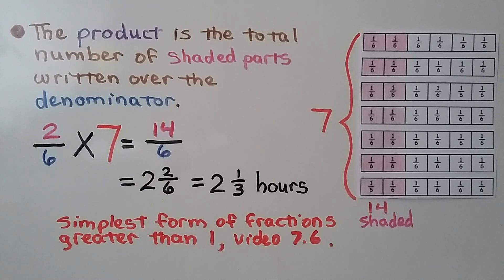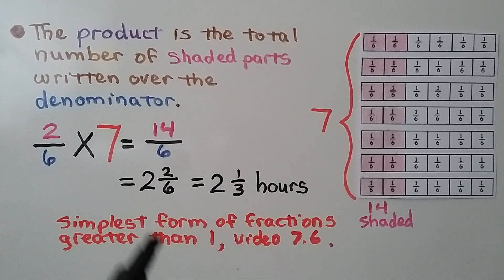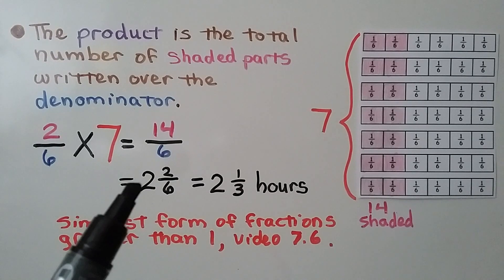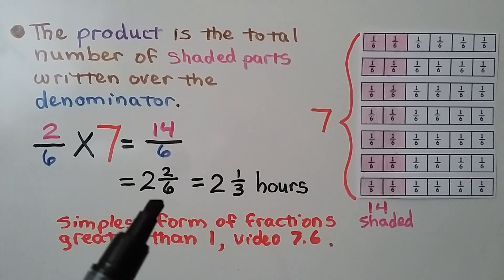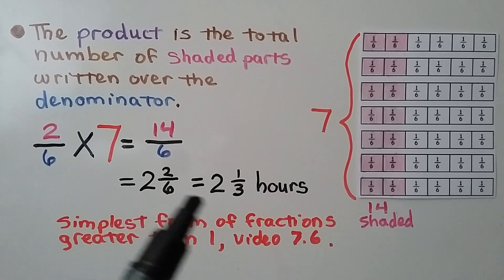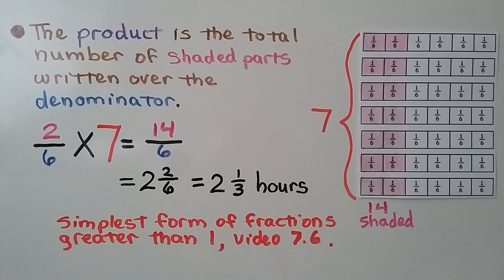We learned how to write the simplest form of fractions greater than 1 back in video 7.6 — it's linked in the description. 14 sixths is 2 and 2 sixths as a mixed number. And we can still simplify the 2 sixths as 1 third. So she walks her dog for 2 and 1 third hours each week.